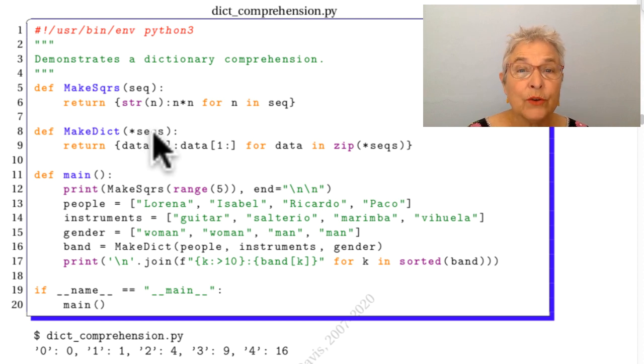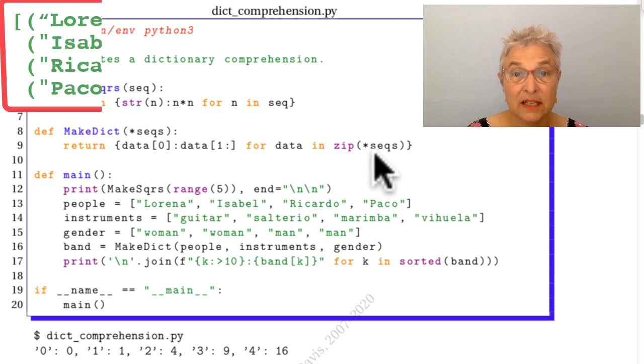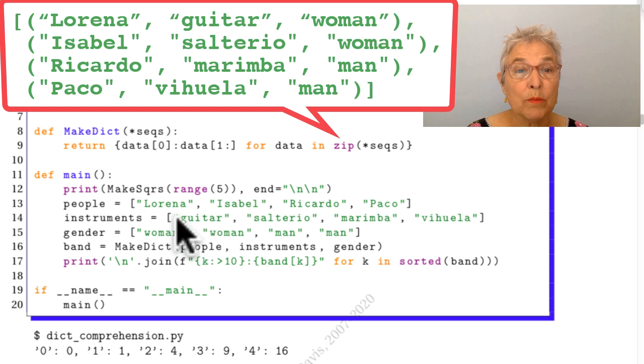And what we're going to do is zip them together. Now remember that that's going to give us a list of tuples. And the first tuple will be Lorena, guitar, woman, and then Isabel, salterio, woman, etc.